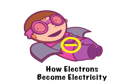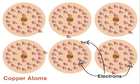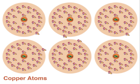How Electrons Become Electricity. Electrons are negatively charged particles in atoms. Electricity is the flow of electrons and a force is needed to move electrons.